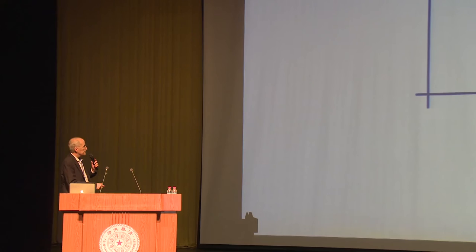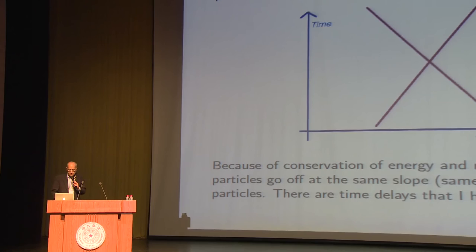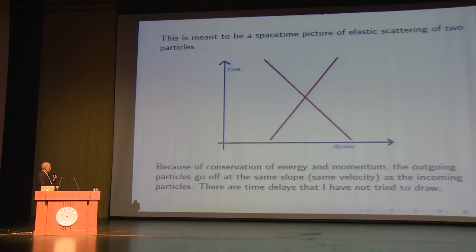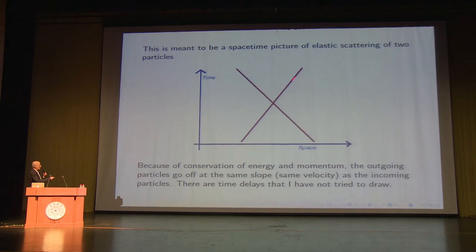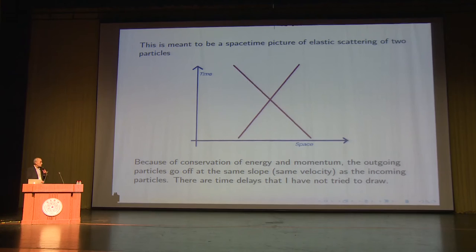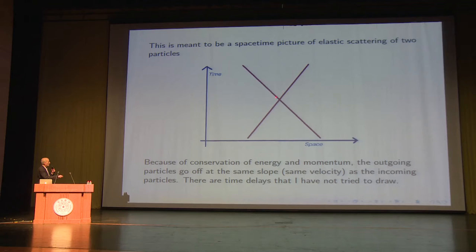I start by drawing a space-time picture of elastic scattering of two particles. This is in a world of one space and one time dimension — it's 1+1 dimensions because I'm not considering the scattering angle. Because of energy and momentum conservation, the outgoing particles go off at the same velocity as the incoming ones, so I've drawn lines with the same slope coming in and going out. There are time delays in scattering, but they would make the picture more complicated, so I've ignored them. The time delay means the outgoing particle is parallel to the incoming one, but with a little bit of a delay.